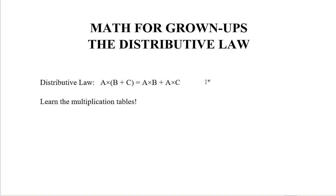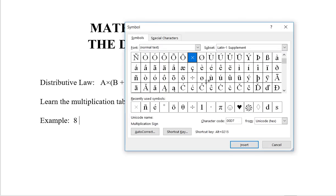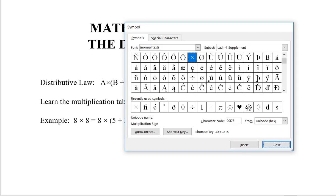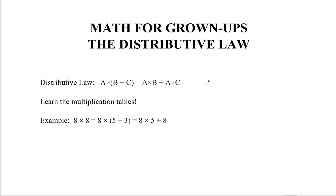And anyway, the distributive law is useful. For example, let's say we have eight times eight. And let's say you don't know what eight times eight is. But we could turn that second eight into, let's say, a five plus three.